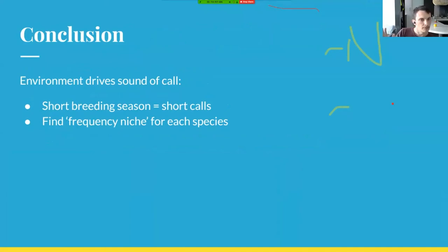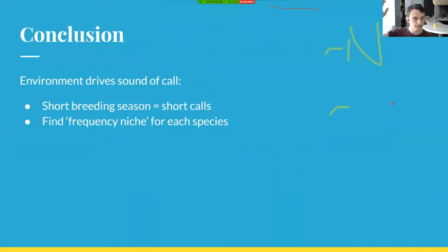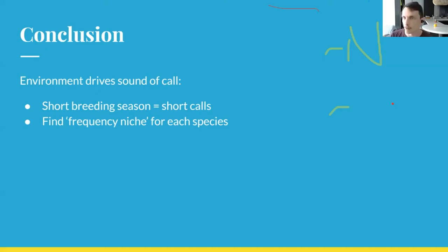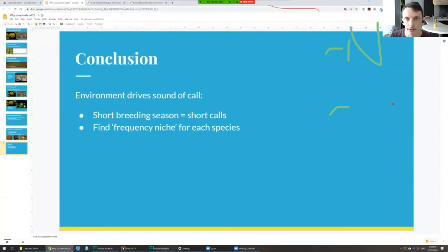The main idea here is that essentially the environment is able to drive that sound of that call. For example, if the breeding season has to be short because there's only a certain amount of water or rain, that leads to generally shorter calls. But they also need to find this frequency niche — find the part of the frequency spectrum that isn't taken up by other species. If it's a new species to that area, they might have to evolve to change their frequency to fit within whatever is available based on the frogs around. That seems to be what happens with a lot of these frogs that call in a very short period of time. I think that's all for the talk — are there any questions?